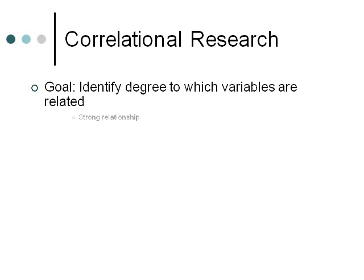When talking about these relationships, you consider whether it's a strong relationship. If you have a strong relationship, then knowing a person's level on variable X means you're confident you could predict their level on variable Y. Also, if a person's level on variable X changes a particular amount, then you're confident you could predict how their level on variable Y would change as well.